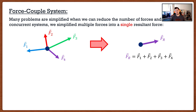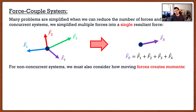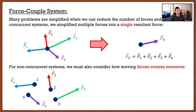The trick there was we had a concurrent system, meaning all of those forces acted at the same point, which made our lives a lot easier. Now, in the past couple of videos, we've been talking about moments and what happens when forces do not act at the same point. So the question becomes: for non-concurrent systems where forces are acting at different locations, how do we find a resultant force and a resultant moment? Let's say we have four forces all acting at different locations — how can we simplify that system?